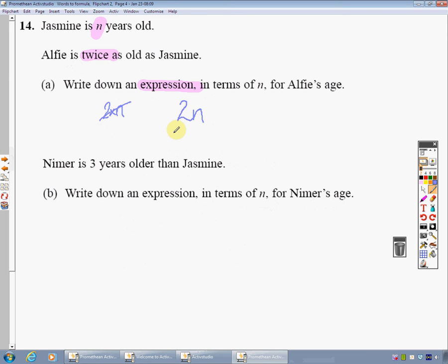Nimer is three years older than Jasmine. Write down an expression - so here we have expression again, so I don't need an equal sign - in terms of n for Nimer's age. So I need to start with an n. There's my n. Nimer is three years older than Jasmine. So if Jasmine is n, he's going to be three years older, so I add three. Now if you're just struggling a bit there, you could just give some ages to the people. So if Jasmine was ten, that would be ten. Nimer would need to be thirteen, so I add three. So ten add three. And I can just use some number examples to get me through that question.